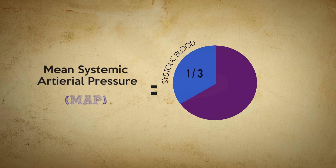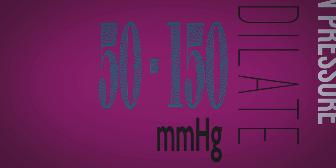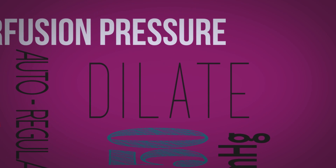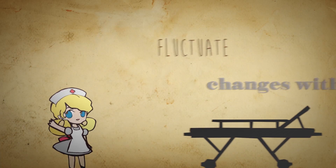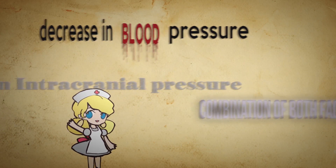The mean systemic arterial pressure is the sum of one-third of systolic blood pressure and two-thirds of diastolic blood pressure. Cerebral perfusion pressure is maintained between 50 to 150 mmHg through autoregulation, which can constrict or dilate blood vessels to maintain stable blood flow to the brain. CPP can fluctuate due to changes in intracranial pressure, a decrease in blood pressure, or a combination of both.